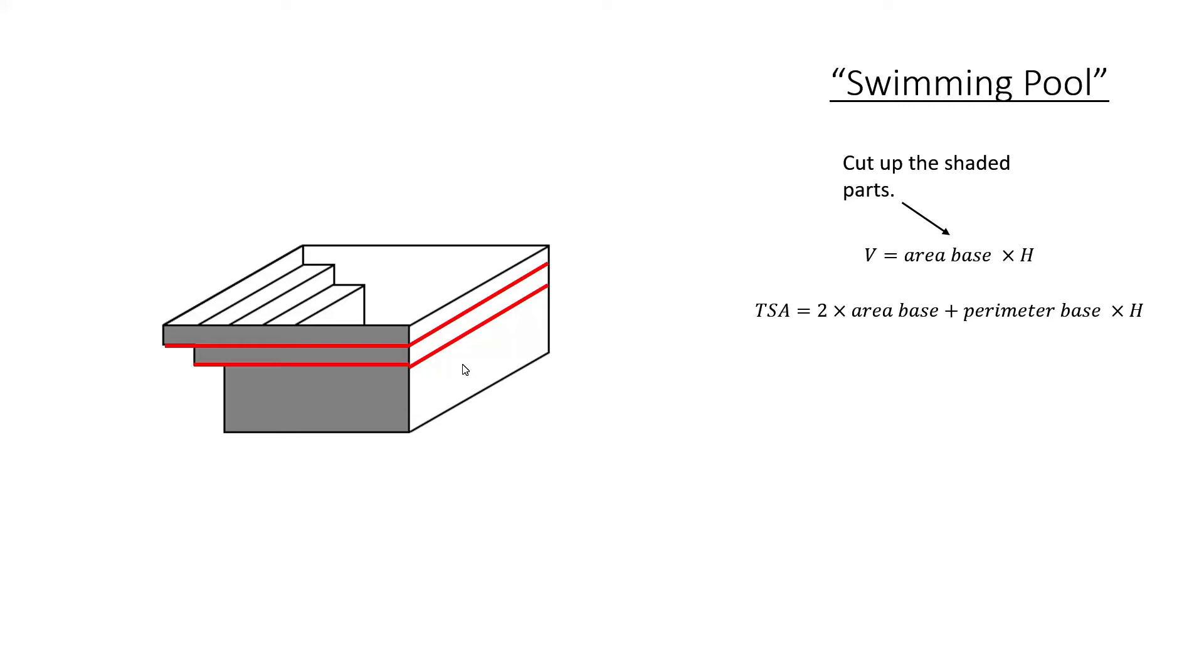So you've got two options of cutting up the shaded part for the volume. You can see I've cut it up horizontally here so that you can take little slices.